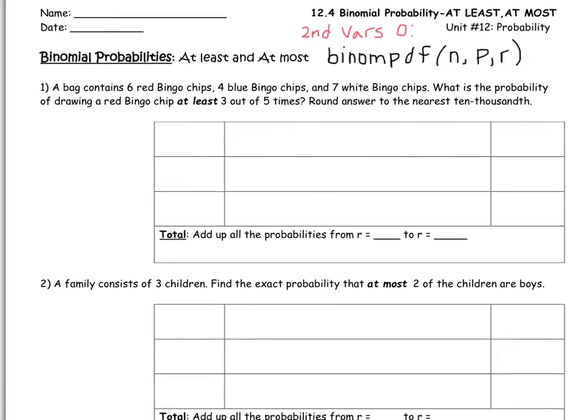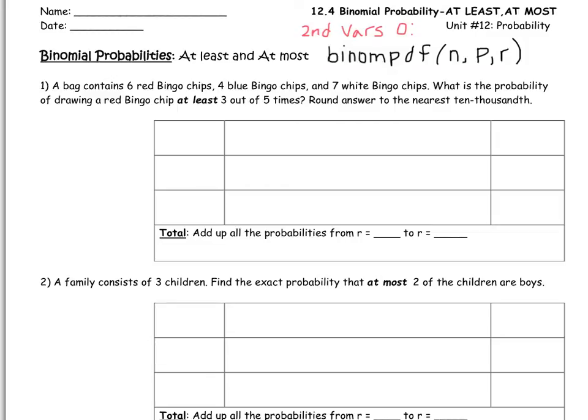A bag contains six red bingo chips, four blue bingo chips, and seven white. What is the probability of drawing a red bingo chip at least three out of five times? In order to do this problem, we first need to understand what the word at least means. If I say you can go to the store and you can spend at least $30 on a pair of shoes, that's really bad for me to say because you could spend at least $30, that means $30 or more.